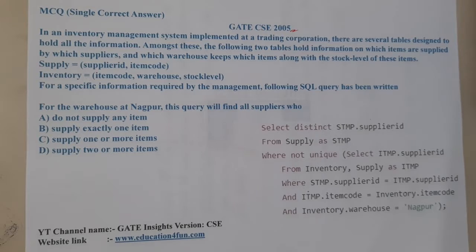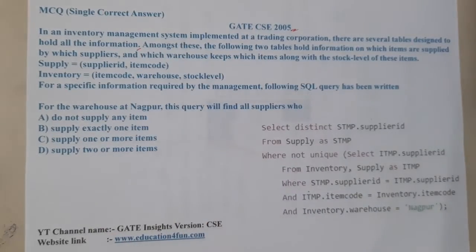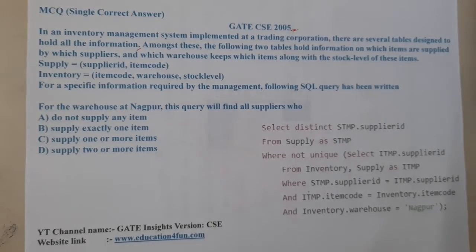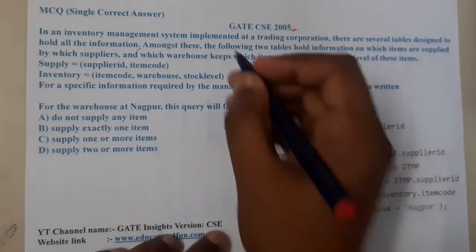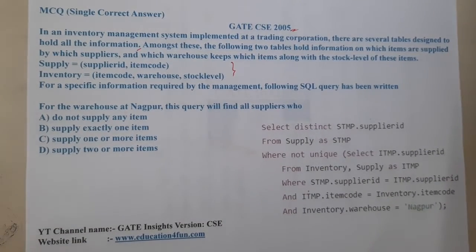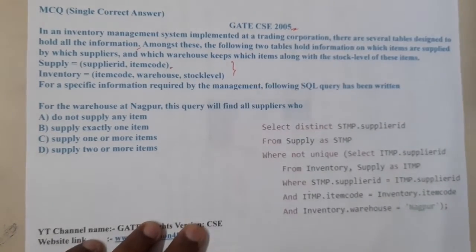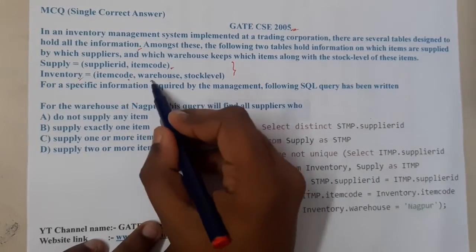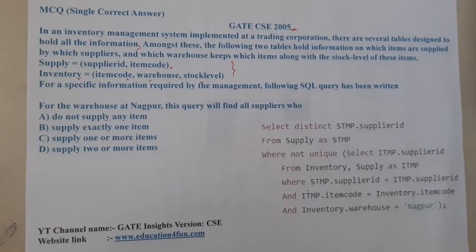The given question is: in an inventory management system implemented at a trading corporation, there are several tables designed to hold all information. The following two tables hold information of which items are supplied and which warehouse keeps which item along with the stock of that particular item. So the Supply table contains supplier ID and item code, whereas Inventory has item code, warehouse, and stock level.